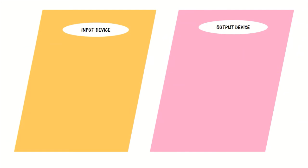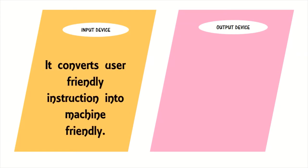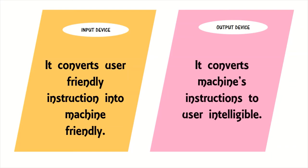Input device: It converts user-friendly instructions into machine-friendly. Output device: It converts machine's instructions to user intelligible.